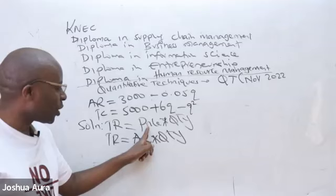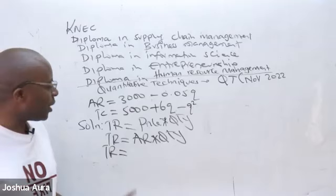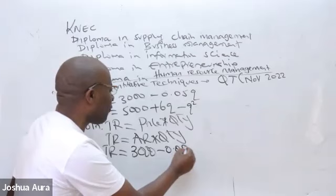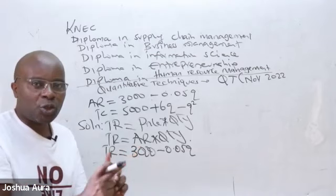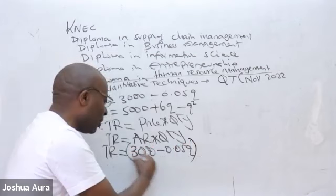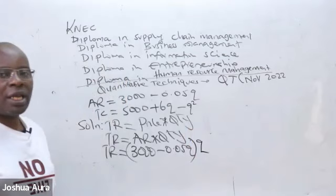So here they have given us average revenue. In that case, our total revenue then will be equal to 3,000 minus 0.05Q. And then of course, these two are supposed to be one thing, it's only that they are unlike terms. So you're supposed to come and block them, put them in brackets like that, times quantity, which of course in this case just stands to be Q.